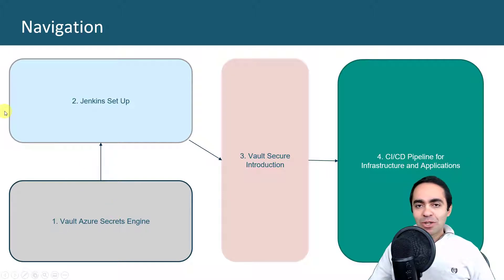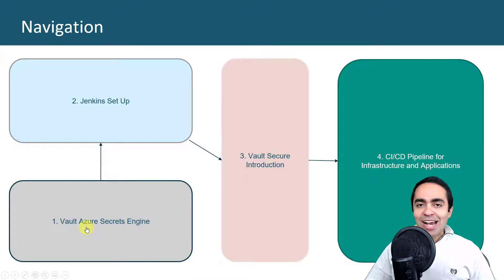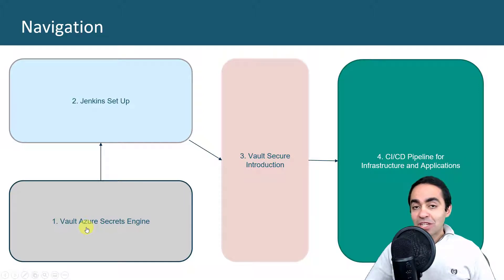We talked about two topics in the last couple of videos. The first one was the Vault Azure secrets engine — we're using Azure cloud to deploy our application, and to do that we're using Terraform to build the VMs. Obviously we need to access Azure, so we need the credentials. In the first video we talked about using Vault to dynamically generate credentials for Azure, and then those credentials can be used with Terraform to build the VMs. All of this is automated, and Jenkins is really the brains behind the operation.